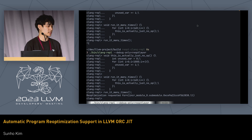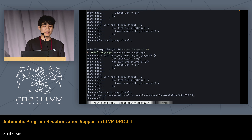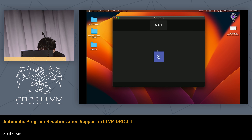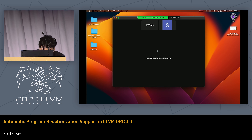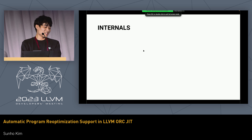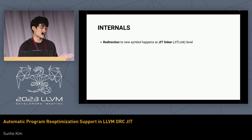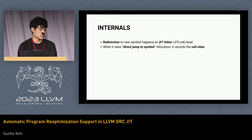Let me briefly review what's going on under the hood. The redirection to the new symbol happens at the g-linker level. When there is a direct jump-to-symbol relocation, it records all the call sites. When re-optimization happens, it rewrites the jump offset of those call sites — we are actually rewriting the instructions.